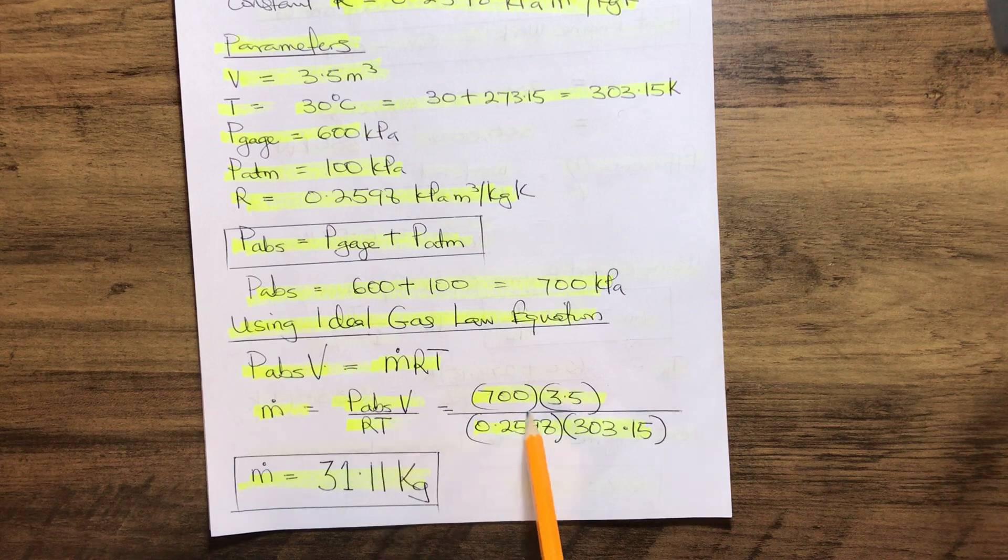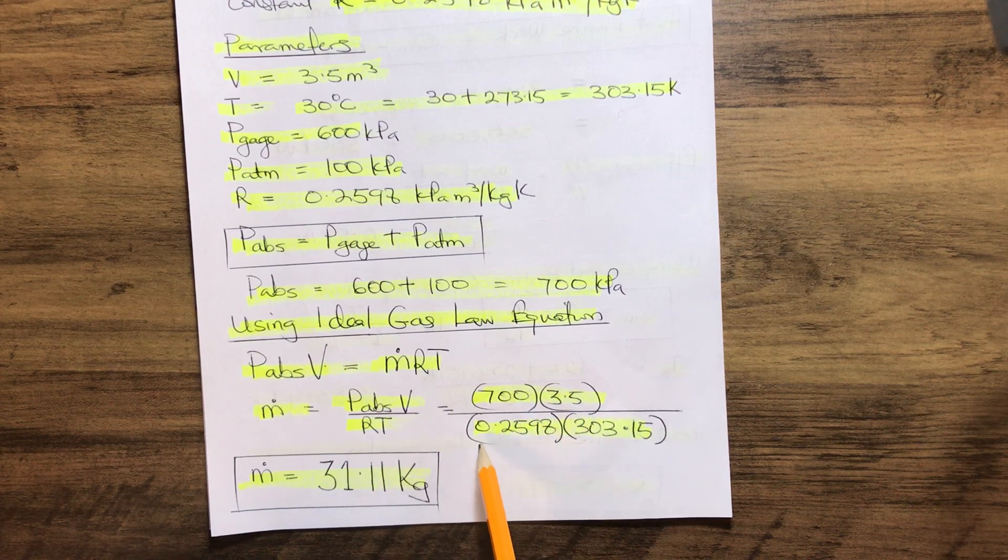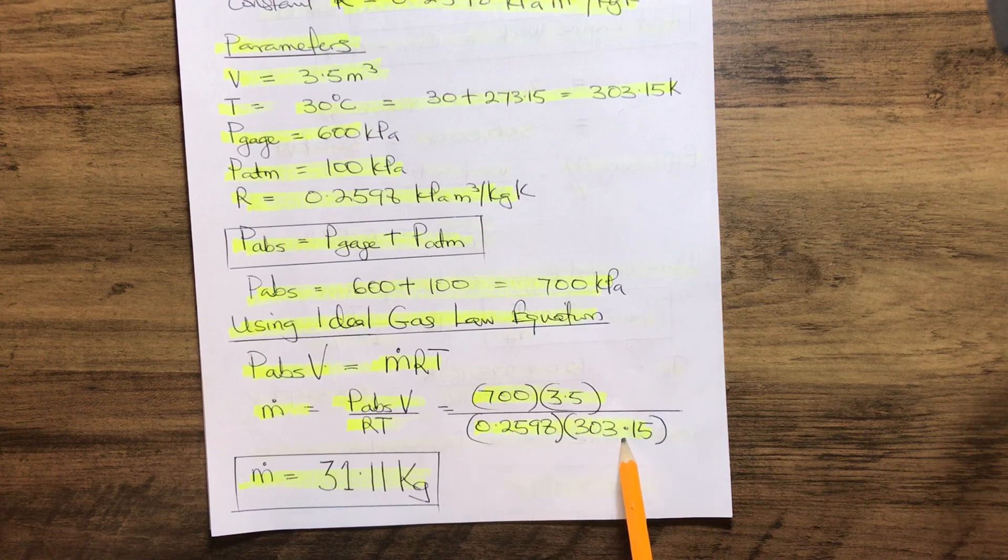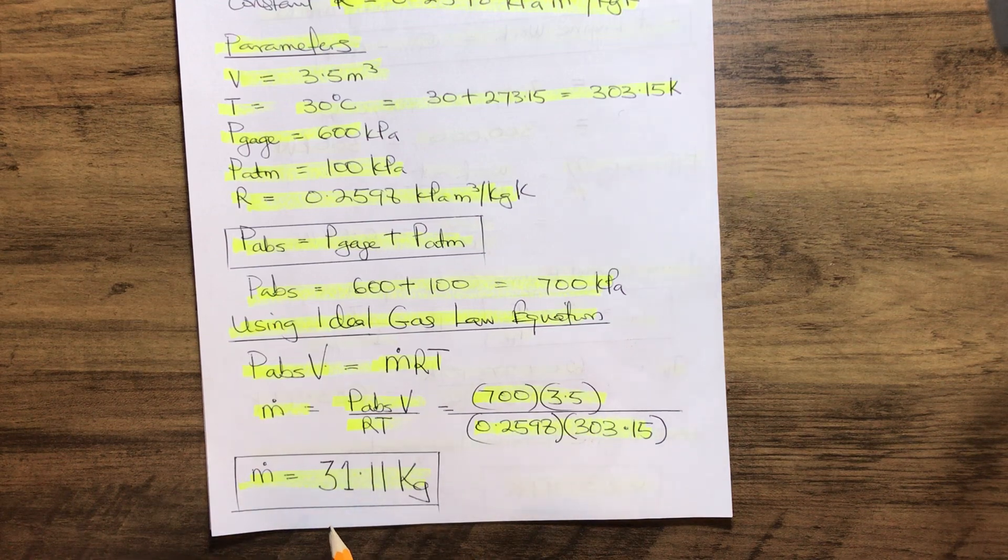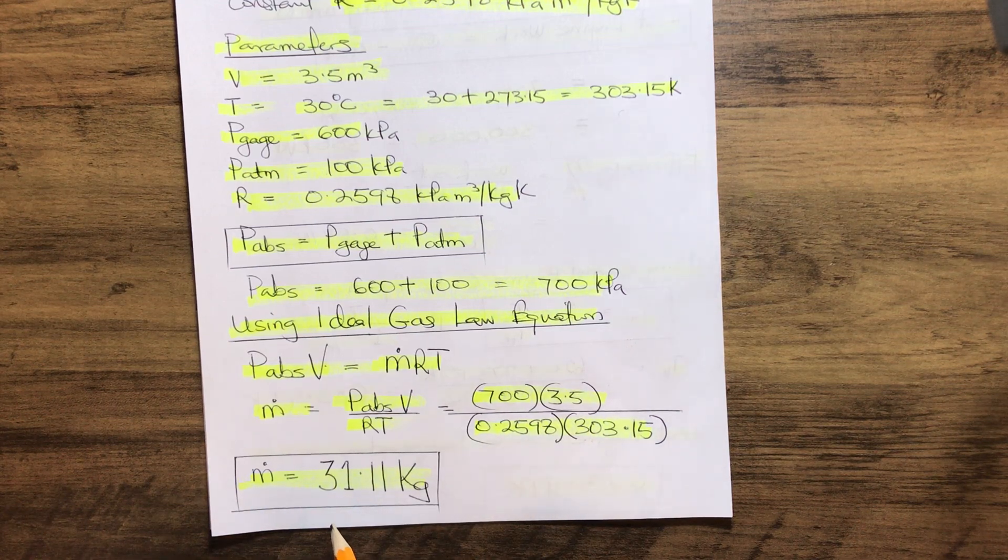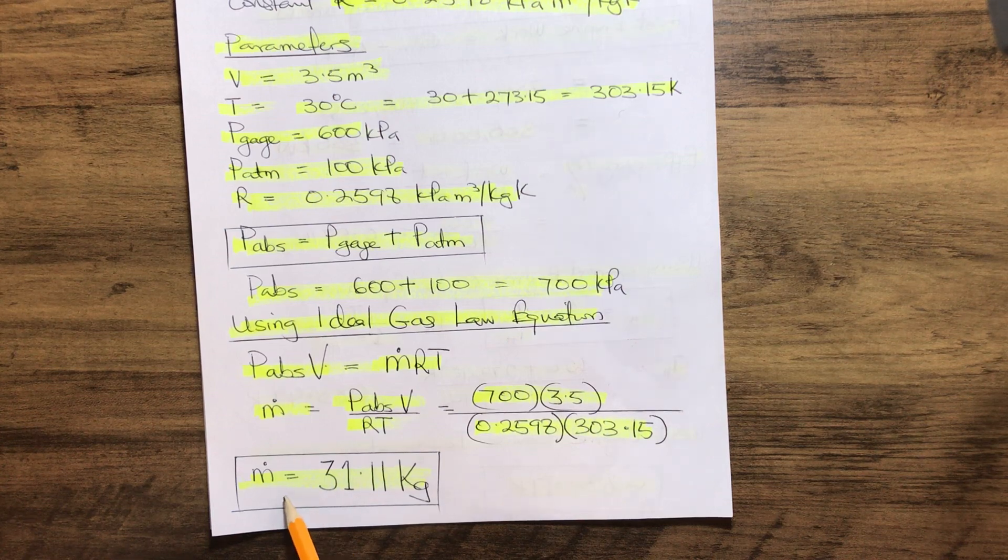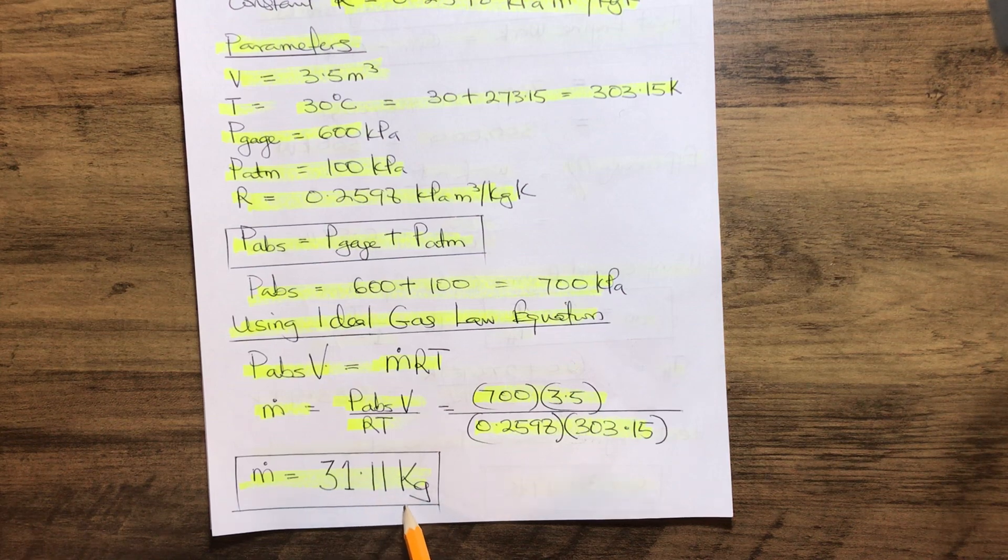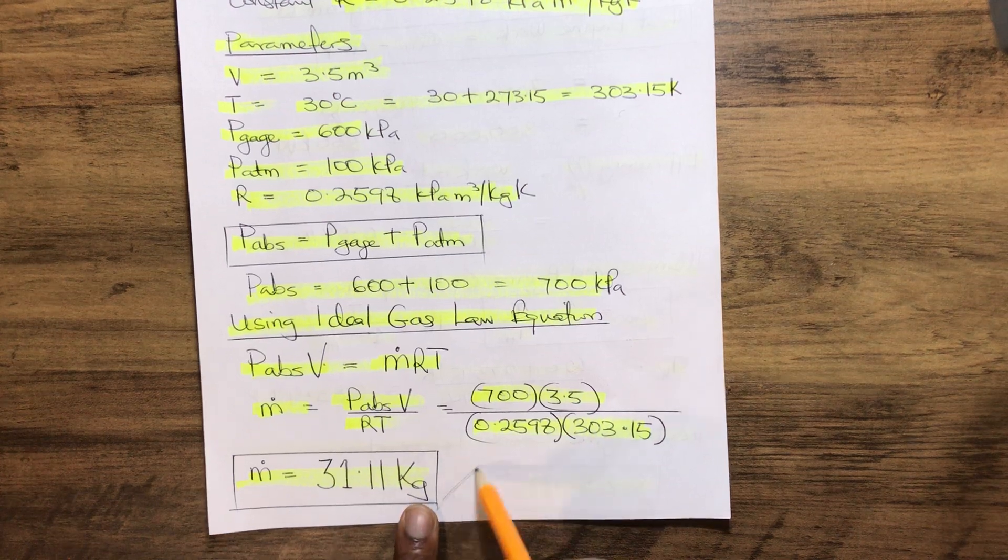That gives us 700 × 3.5 / (0.2598 × 303.15). Therefore, our calculated oxygen mass stored in the tank of 3.5 m³ equals 31.11 kg. Thank you.